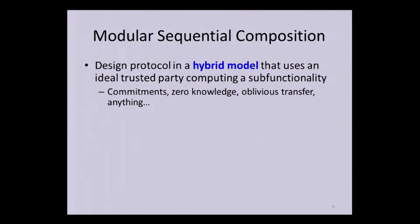A very important property of security is that of sequential composition, or modular sequential composition. This goes back to earlier work, in particular to 2000 and even earlier. We consider a hybrid model in which the parties communicate with each other as usual sending messages, but they're also allowed to speak to an incorruptible trusted party who will compute some sub-functionalities for them.